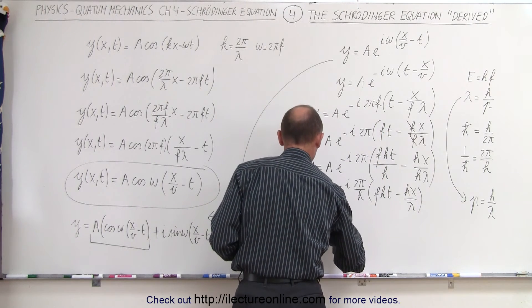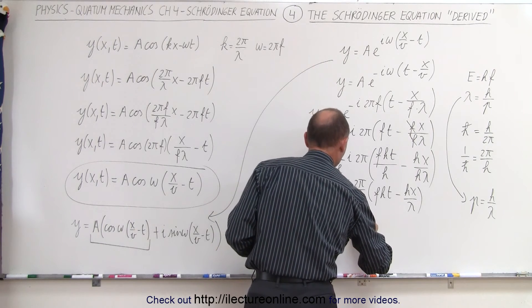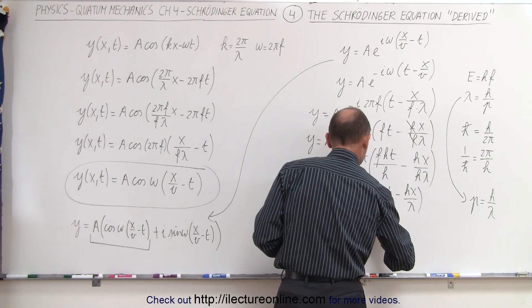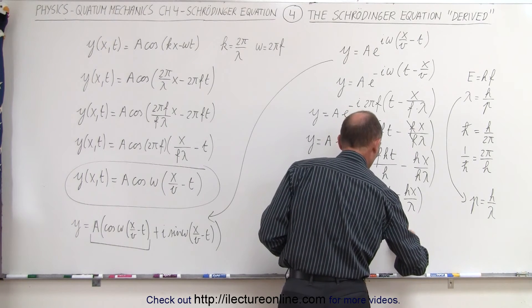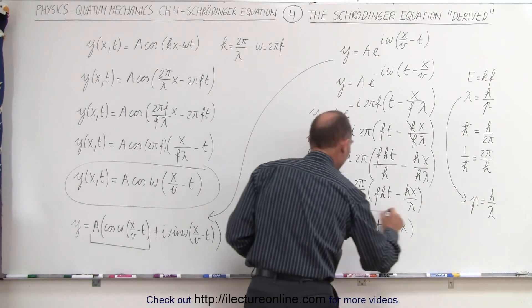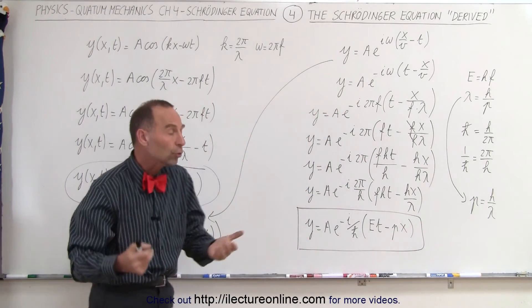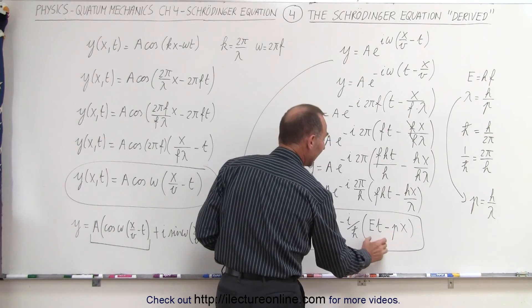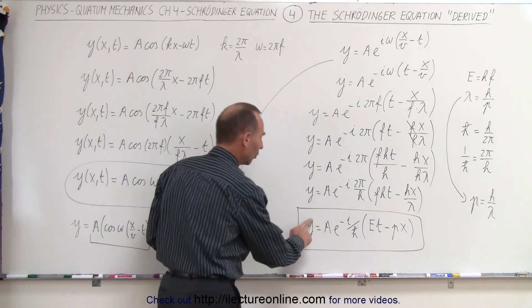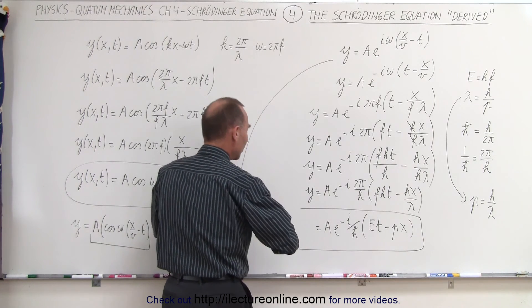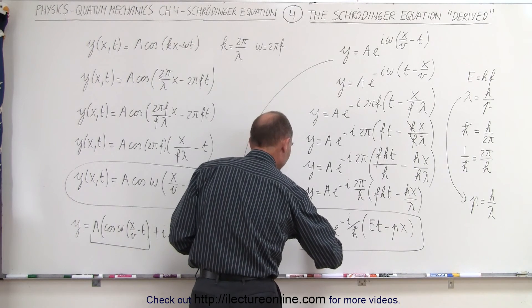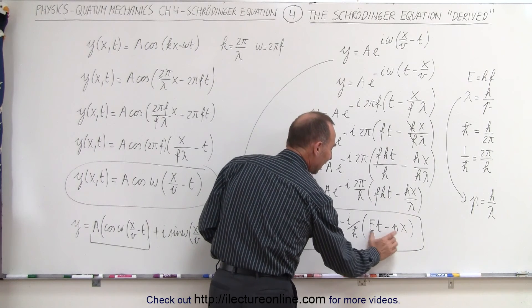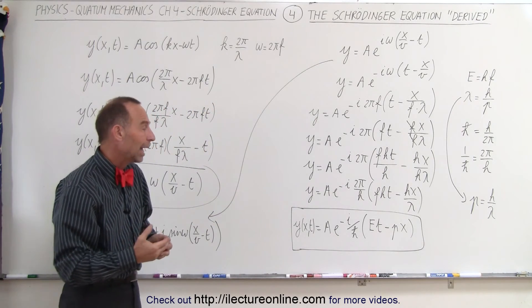And finally, we can write that y equals A, the amplitude, times e to the minus i times 1 over h bar. So it's i divided by h bar times the energy of the particle times time minus the momentum of the particle times x. And this is the format of the equation they were looking for in order to be able to produce the Schrödinger equation. It had to be a function in terms of the energy of the particle and the momentum of the particle, and it had to be time and position dependent. So if we want to actually add that over here, we can say that y as a function of position and time can be written like this. So it is dependent on time and position, but it also has the energy and the momentum involved so that we can actually turn that into a Hamiltonian.